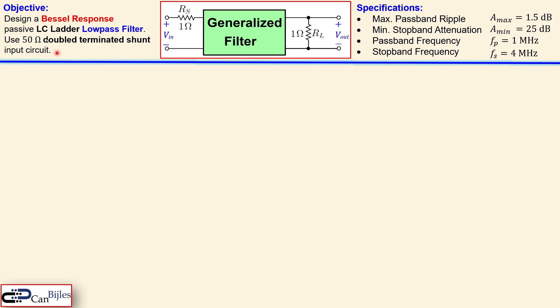So let's look at our problem. We have an objective: we need to design a Bessel Response passive LC ladder low pass filter. We must have a 50 ohm double terminated shunt input. What does it mean? Actually what we want to design is this part, the green box which is a generalized filter. It must be a low pass filter of the LC ladder configuration and the RS and RL which are here normalized to 1 ohm must be scaled up to 50 ohm.